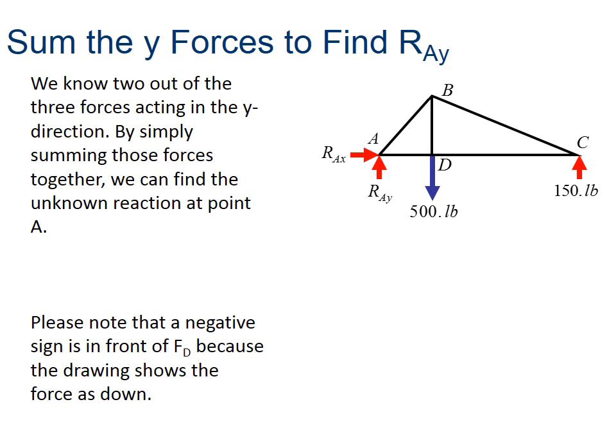So now the next equation we're going to use, because we've already used one on some of our moments, the next one we're going to use in this example, we're going to sum the forces in the Y direction. So we write our equation. We put in what we know. FD is pointing down. So it is negative. RCY is positive because it is pointing up.